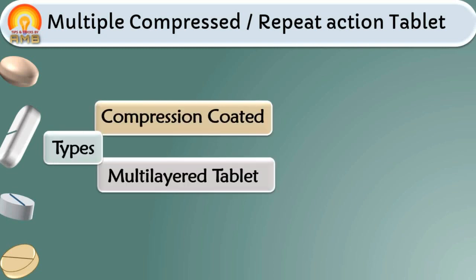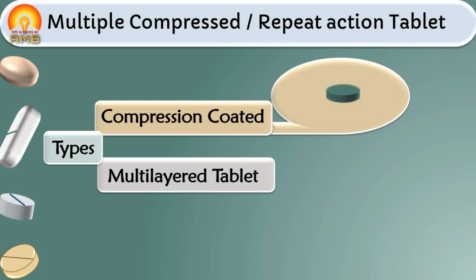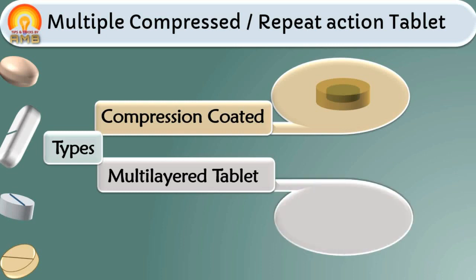Multiple compressed tablets are of two subtypes: compression coated tablets and multi-layered tablets. In compression coated tablets, to avoid incompatibility, ingredients of the formulation except the incompatible material are compressed into a core tablet first, and then the incompatible substance along with excipients is compressed over the core tablet. A special type of machine is used which provides two compressions.